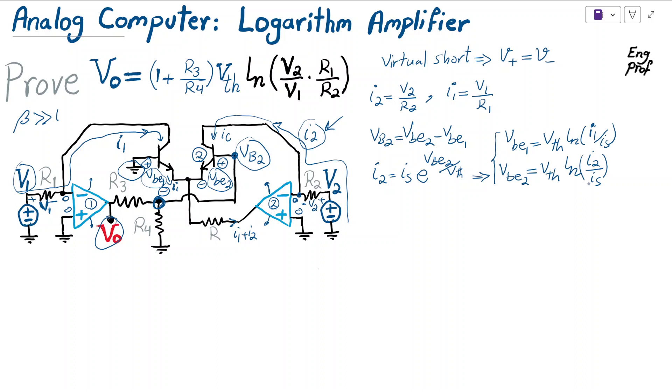If I'm interested in finding VBE2, I substitute these outcomes—equation 1, 2, and 3. Substituting equation 2 and 3 for VBE2 and VBE1 gives me VB2 equal to—I can factor out V threshold—then the subtraction becomes ln i2 over Is minus ln i1 over Is, which effectively becomes i2 over Is divided by i1 over Is. The Is terms cancel out, so I have just V threshold times natural logarithm i2 over i1.